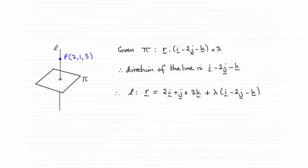Hi there. Now, the answer to this question is that the equation of the line L is R equals 2i plus j plus 3k plus lambda in the direction i minus 2j minus k.